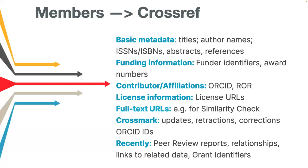When registering content, members supply a wide range of metadata. Basic metadata includes titles, authors, publication dates, ISSN, and ISBN. We also collect additional data such as reference lists, funding data, ORCID and ROAR IDs, and license data. Information about errata, retractions, and updates can be registered through our Crossmark service. We ask that you send as much metadata as possible and that it be accurate and clean. Records can always be updated at any time, and we strongly encourage you to do so whenever more information becomes available.